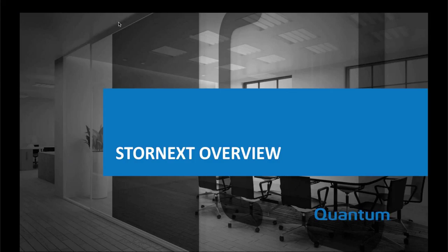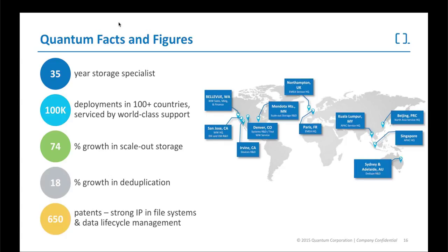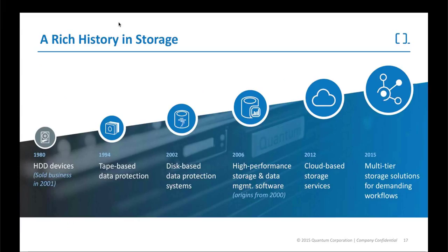Let's talk about Stornex and Quantum. They're the market leader in storage with a phenomenal client list and amazing awards. They're 35 years in this industry — not a newcomer. They have broken and fixed more things than other storage vendors because they've had time to discover and work through it. Lots of deployments, lots of growth. Importantly, they hold 650 patents, which shows they're an innovative company defining the storage landscape.